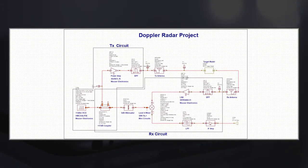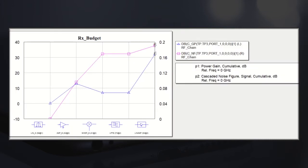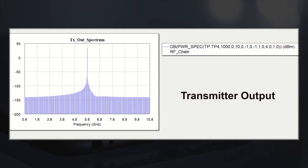The system level design of our project is performed using AWR Microwave Office design environment. This is the VSS design of our radar sensor. This is the transmitter budget of the transmitter circuit and this is the receiver budget of the receiver circuit. The transmitter output spectrum, which is a signal of about plus 20 dBm at 5.8 GHz, is shown here.